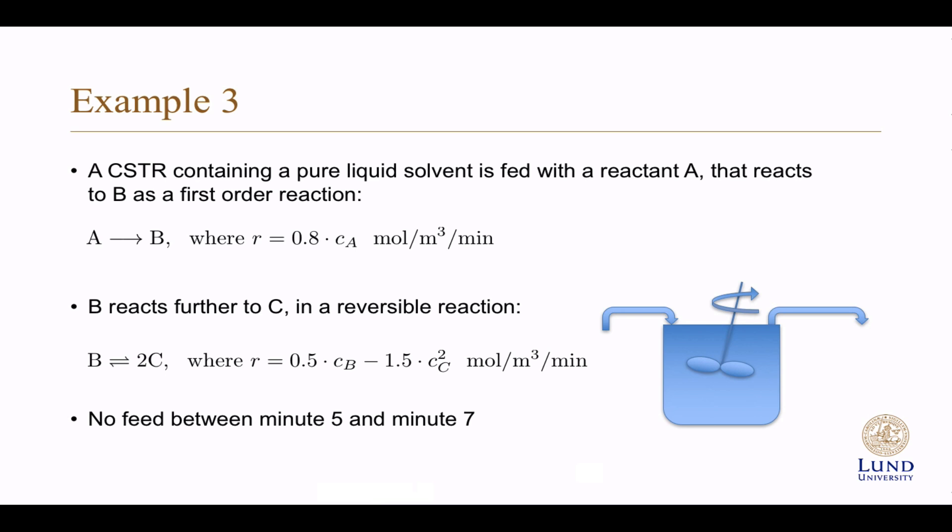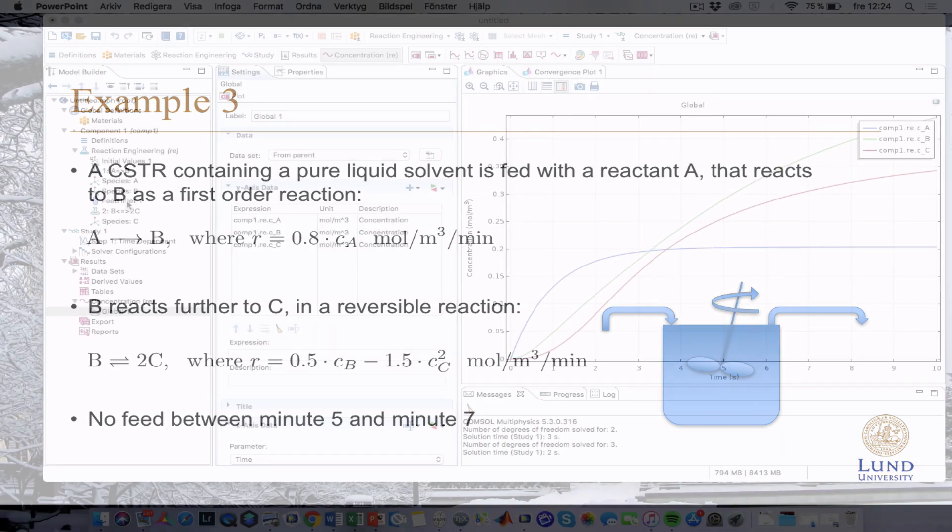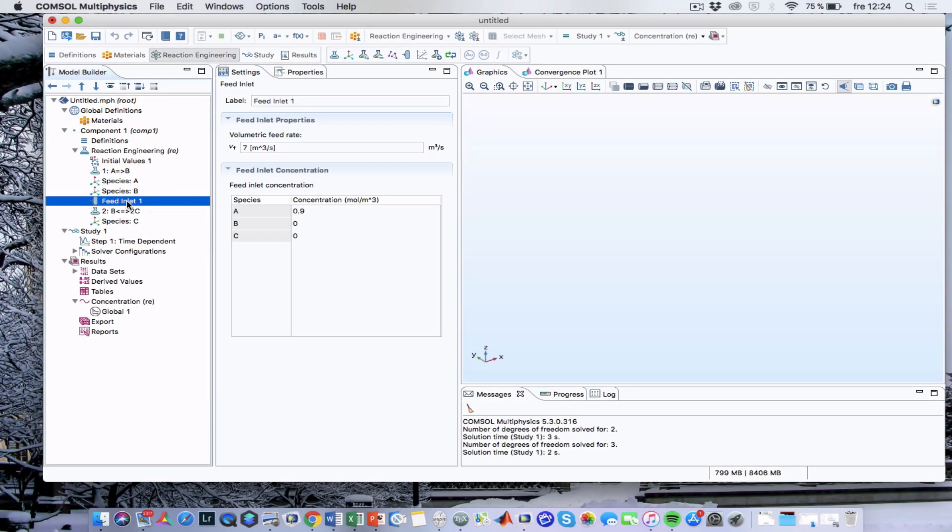In the final example, we should simulate what happens if there is no feed between minute 5 and minute 7, which could be due to a failed pump that brings the feed to the reactor.